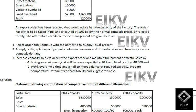They have given two sub-options for option 3. Number 1: buying equipment that would increase the capacity by 10% and fixed costs by $40,000. Number 2: work overhead at time and a half to meet the balance of the required capacity.